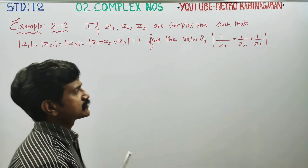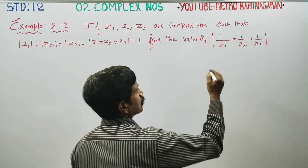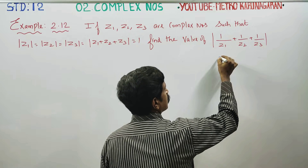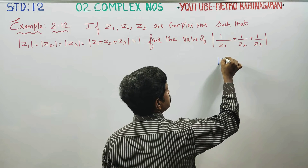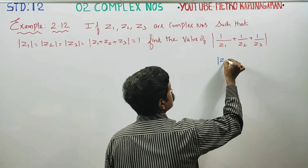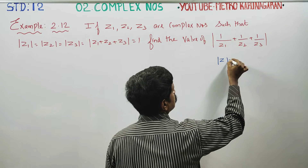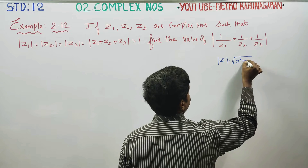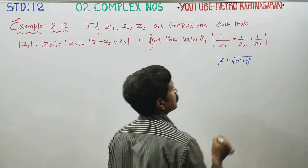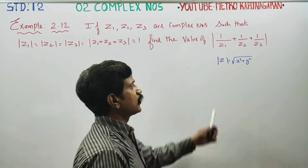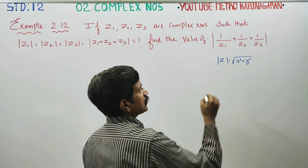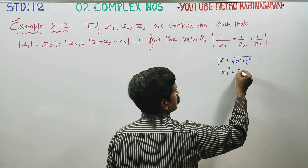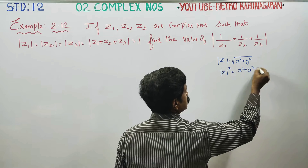Before entering into this sum, a small reminder of the properties. What is the modulus of a complex number? The modulus of a complex number is the square root of the real part squared plus the imaginary part squared. Squaring on both sides, you get x squared plus y squared.